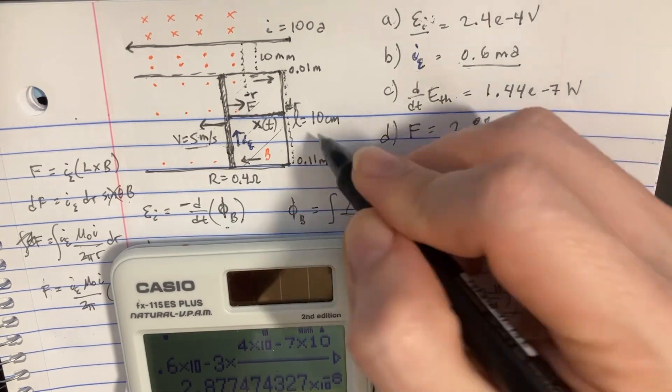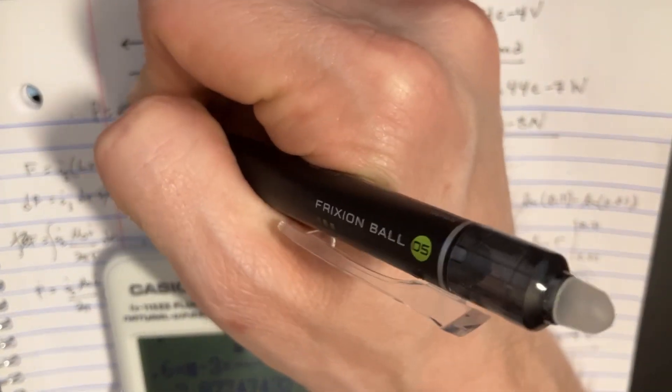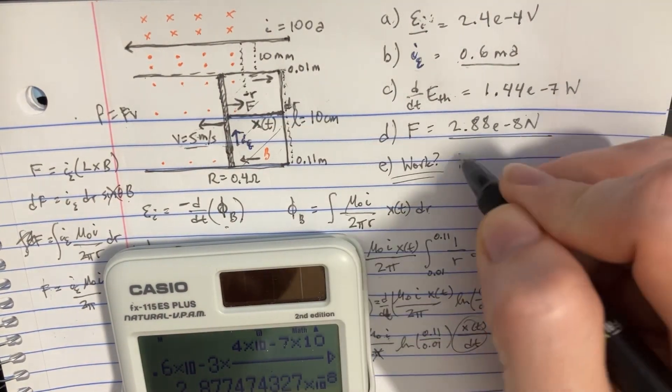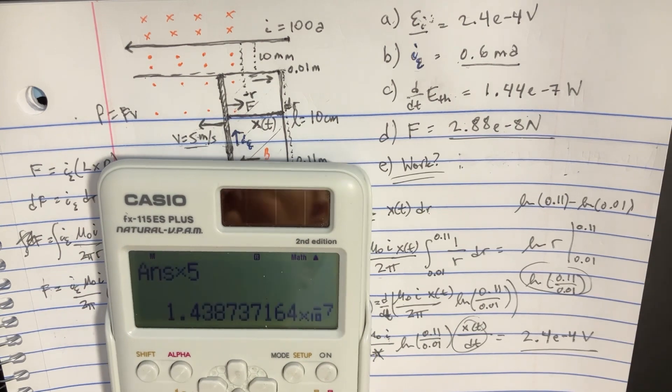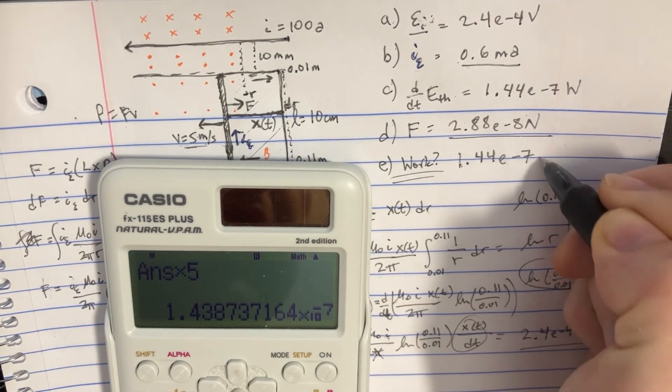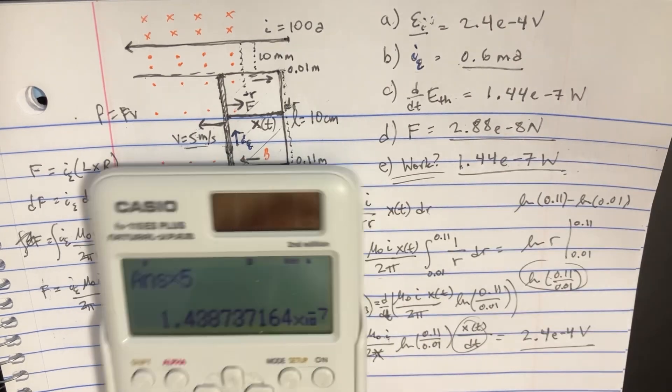And for the work, for this type of setup over here, we should know that the power, the work, is fv. And so we'll just multiply this by 5. So we should get the work is 1.44 e to the negative 7 watts. Crazy.